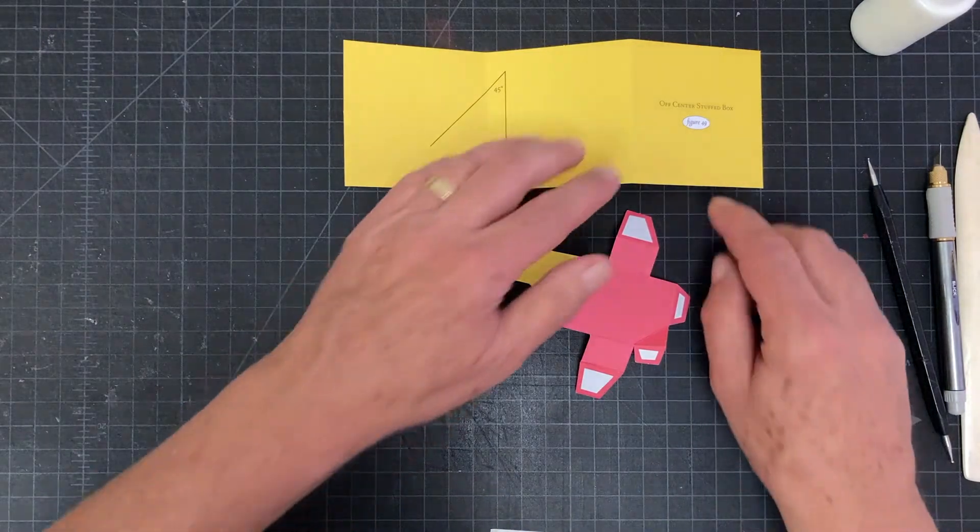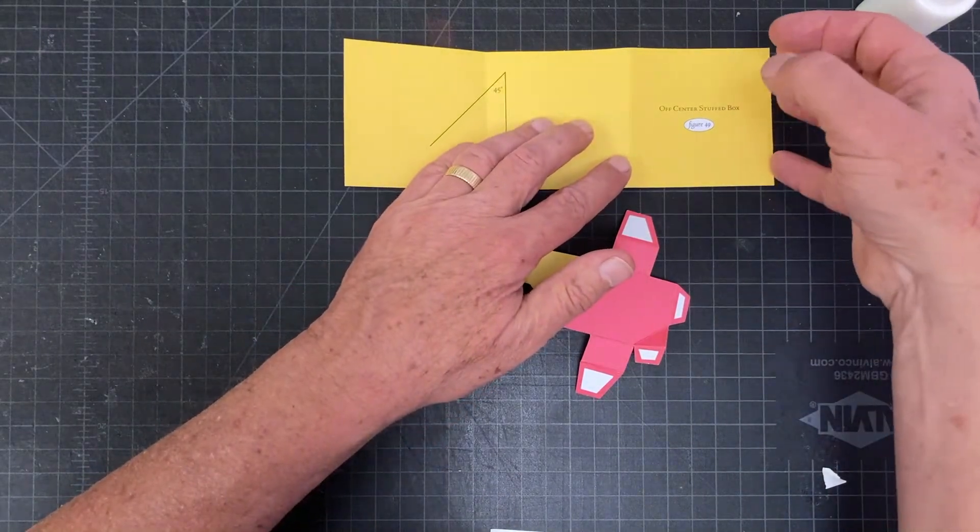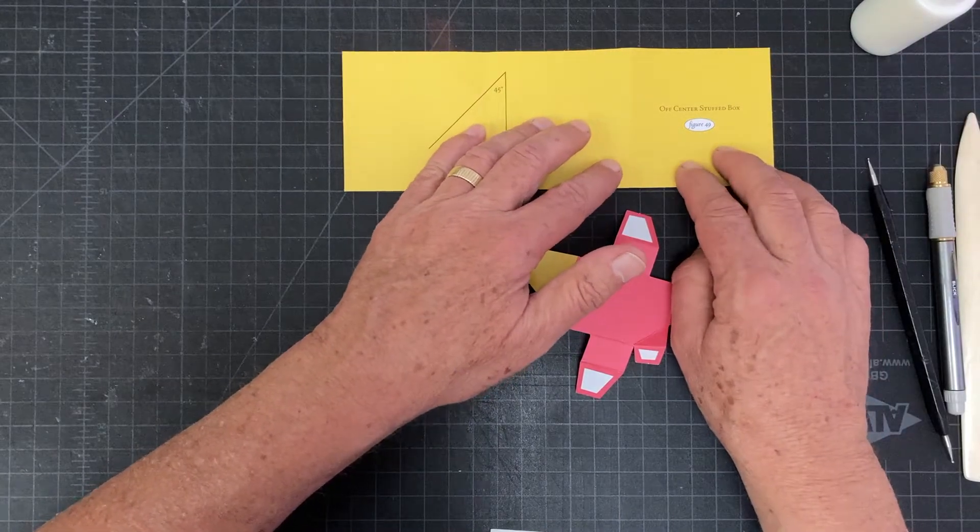All right, next I'll be building figure number 49, the off-center stuffed box.